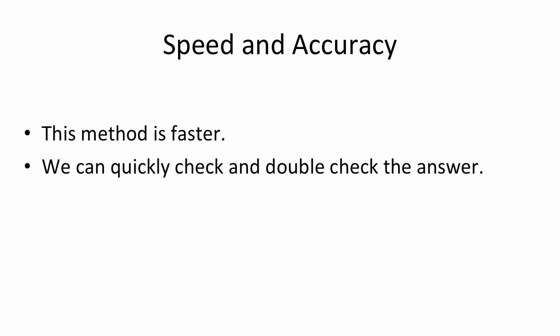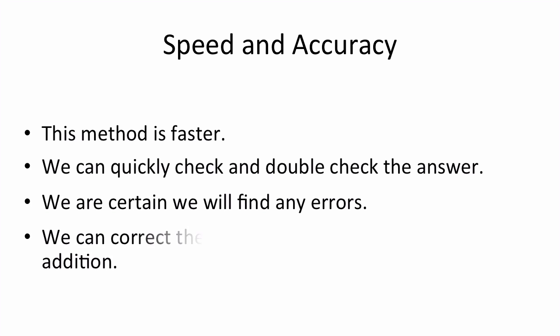The Trachtenberg addition helps us with speed and accuracy because the method is faster. We're not counting as high as we would normally. We can quickly check and double-check the answer, and because of that we're certain we'll find any errors. We also know that we can correct the result without having to repeat the whole addition.